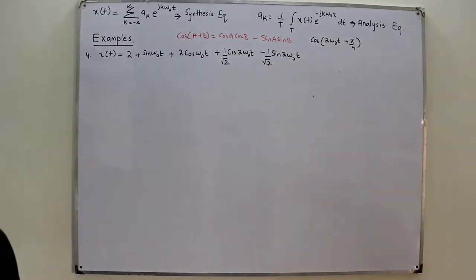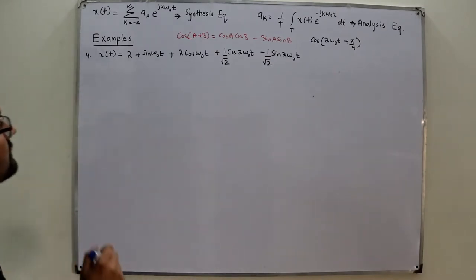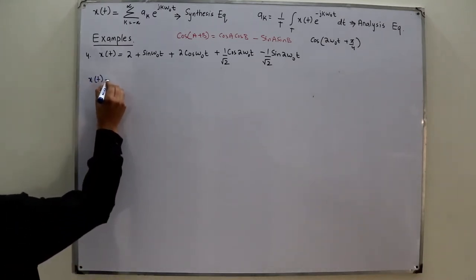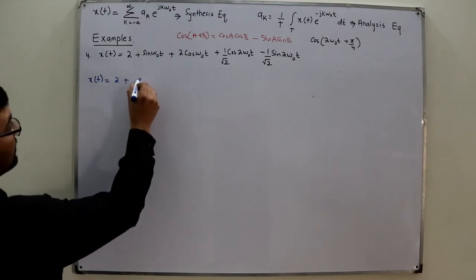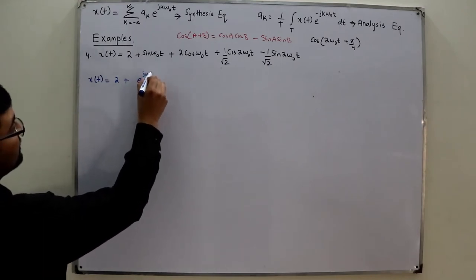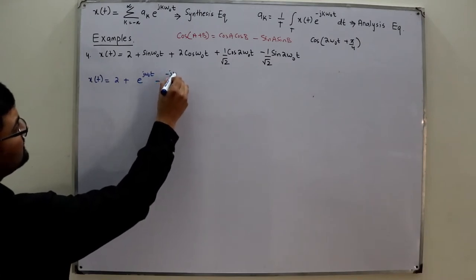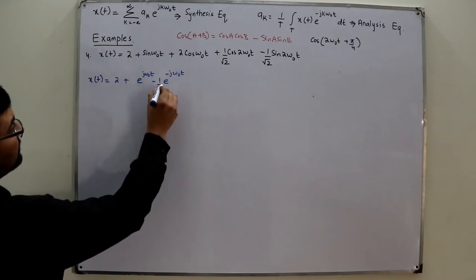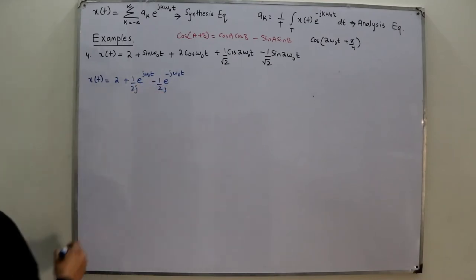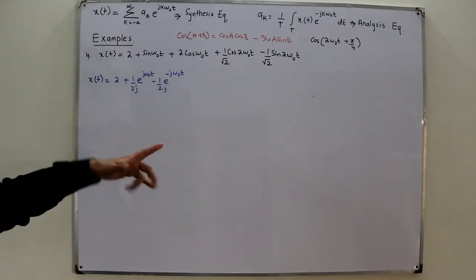Now we break everything into exponential terms using Euler's theorem. So x(t) is written out: for the sine term we have (e^(jω₀t) − e^(−jω₀t)) / 2j, splitting it up directly with the 1/(2j) factor.